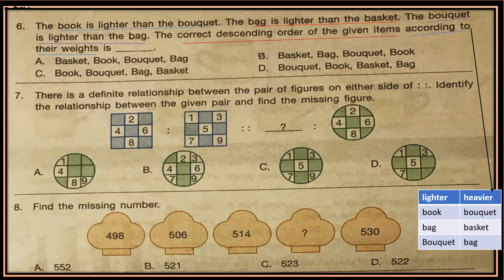Question 7: There is a definite relationship between the pair of figures on either side of the column. Identify the relationship between the given pair and find the missing figure. The blue squares have a certain relationship — establish the same relationship in the green squares and choose the correct missing figure from the options.